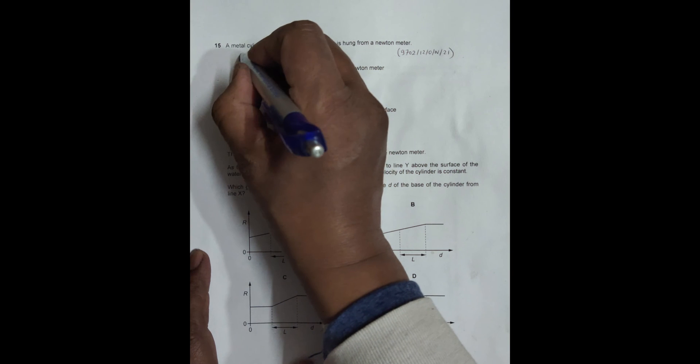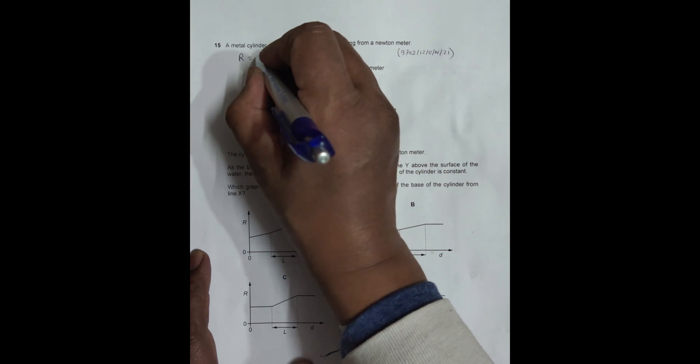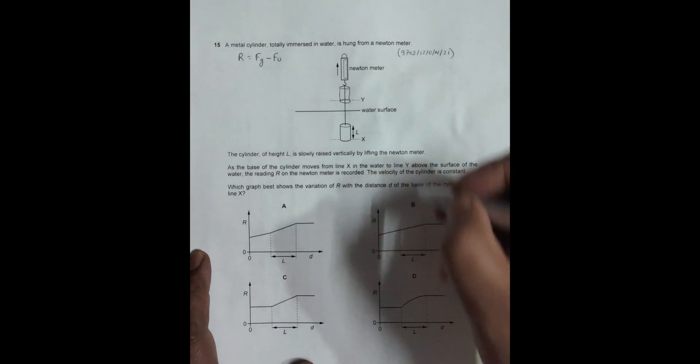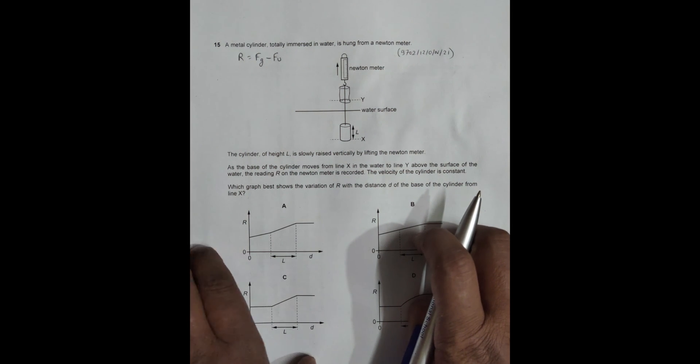Let's first remember that the reading R recorded by the Newton meter is the resultant weight, and that's equal to the real weight of the thing which is FG minus FU. FU is the upthrust.